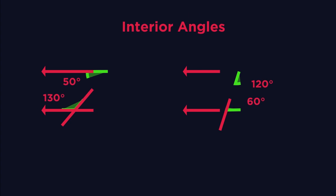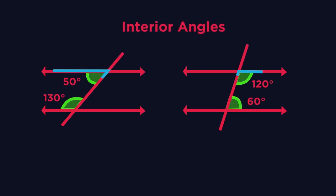These are called interior angles or co-interior angles. What do you notice about them? Interior angles always add up to 180 degrees. These look like a C, rather than an F and a Z.